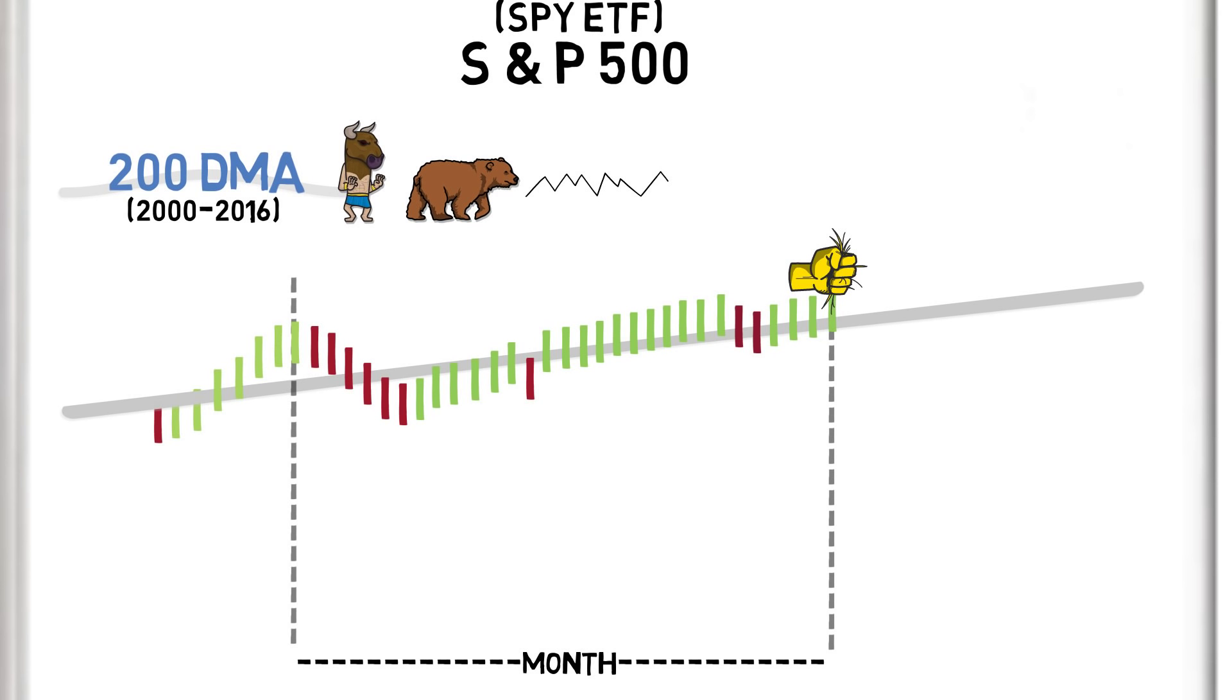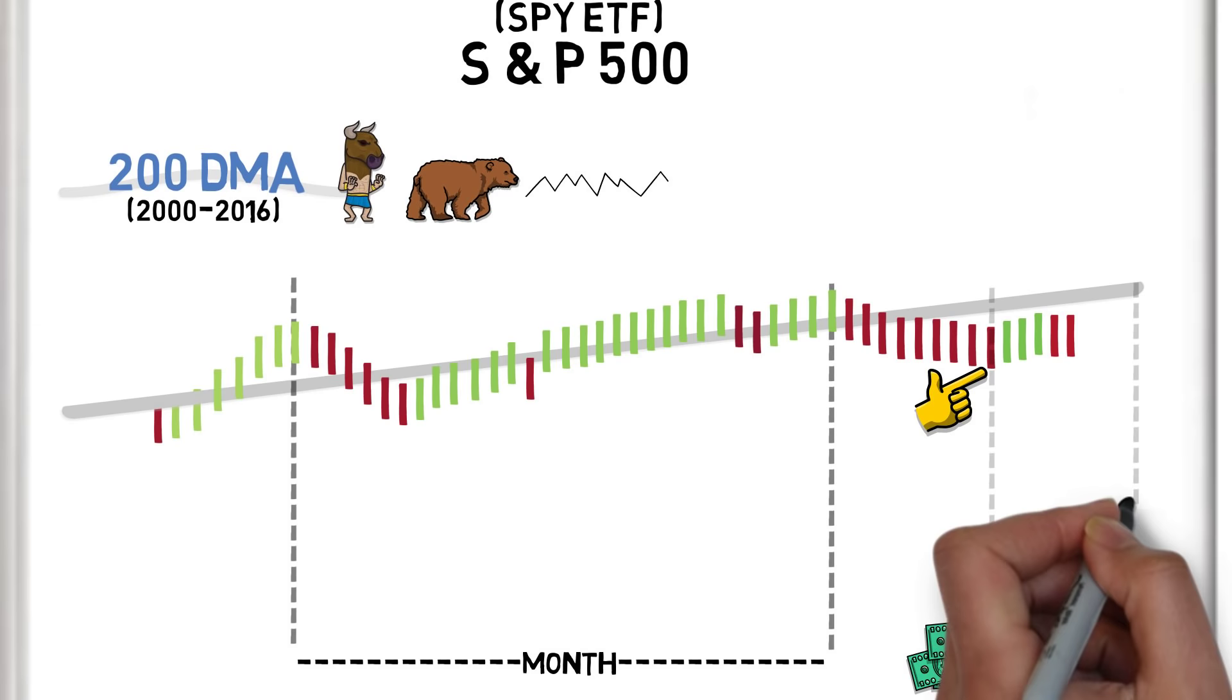If the price continued and closed below the 200 day moving average at the end of the next month, we would sell our position and remain in cash, whilst waiting for the end of the next month to see if price crossed and remained above the 200 day moving average, at which point we would re-enter a long position.